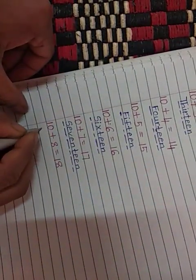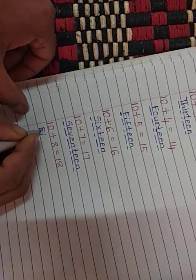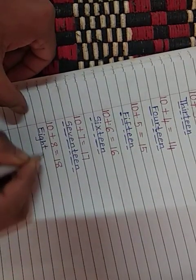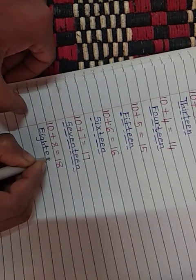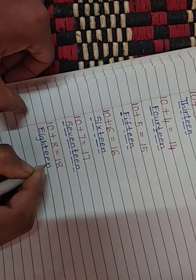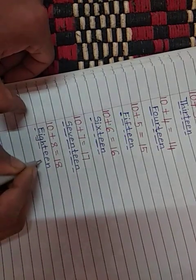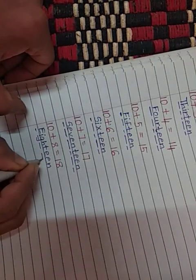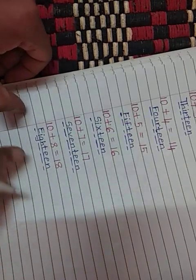Here we will write 8: E-I-G-H-T. E-E-N will come. As T is already in eight, we will not write the letter T again. E-I-G-H-T-E-E-N, 18.